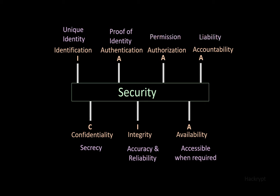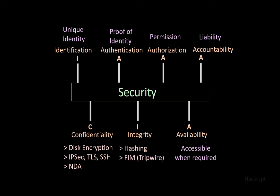Confidentiality can be achieved by using disk encryption, IPsec, TLS, SSH, or a non-disclosure agreement. Integrity can be achieved by hashing algorithms or file integrity monitoring tools like Tripwire. Availability can be achieved by using backup, load balancing, and business continuity planning.